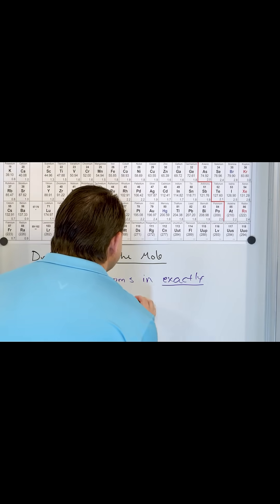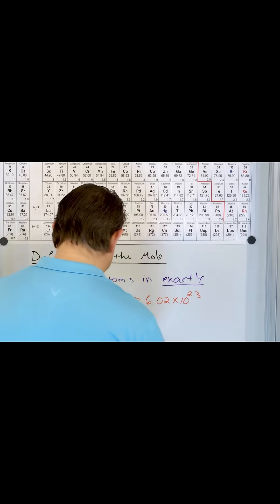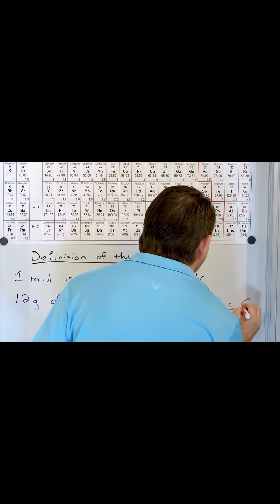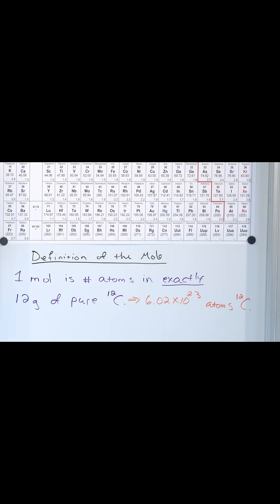And that means that this is 6.02 times 10 to the 23rd atoms of carbon-12. This is the most common form of carbon in your body, with six protons and six neutrons.